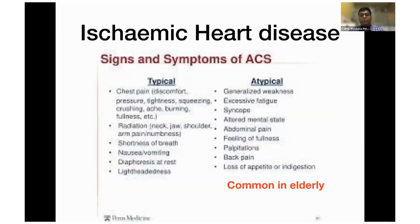When it comes to elderly patients, the presentation of acute coronary syndrome can be atypical: generalized weakness, excessive fatigue, syncope, altered mental state, abdominal pain, feeling of fullness, palpitation, back pain, and loss of appetite or indigestion. In contrast, typical presentation includes chest discomfort, pressure, tightness, squeezing or crushing pain with autonomic symptoms like sweating and nausea. Therefore, a thorough history, proper evaluation, adequate investigations, and referring the patient is important to not miss the important diagnosis of acute coronary syndrome.